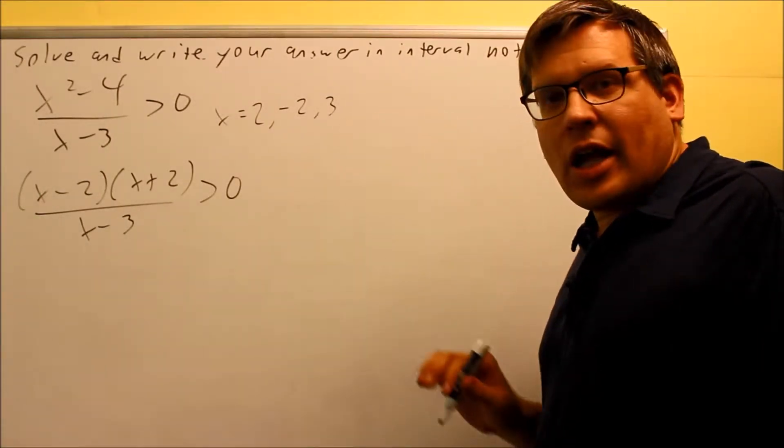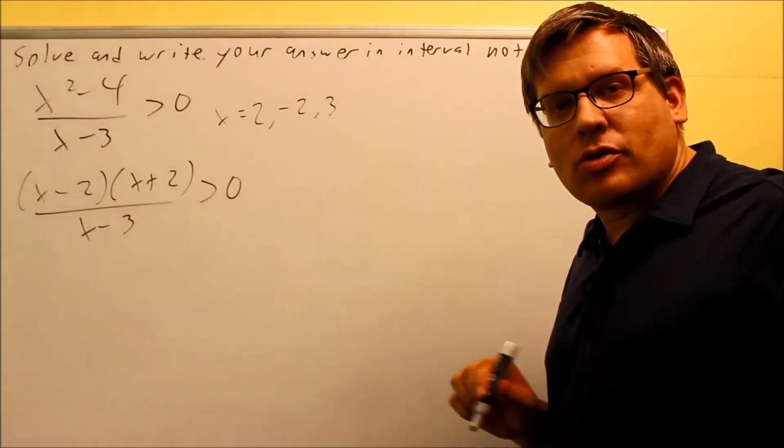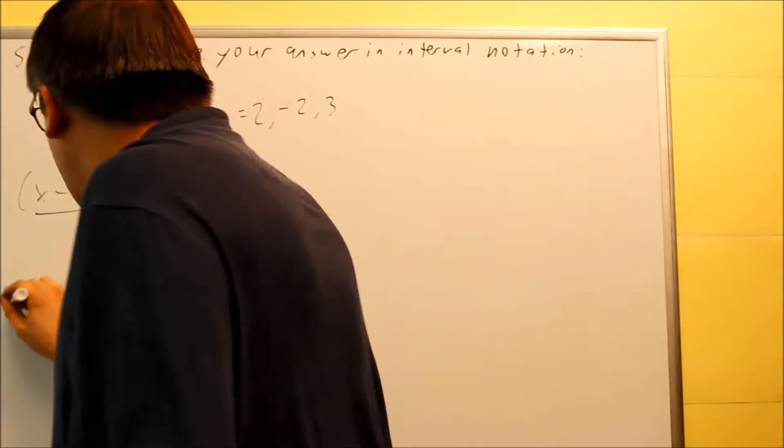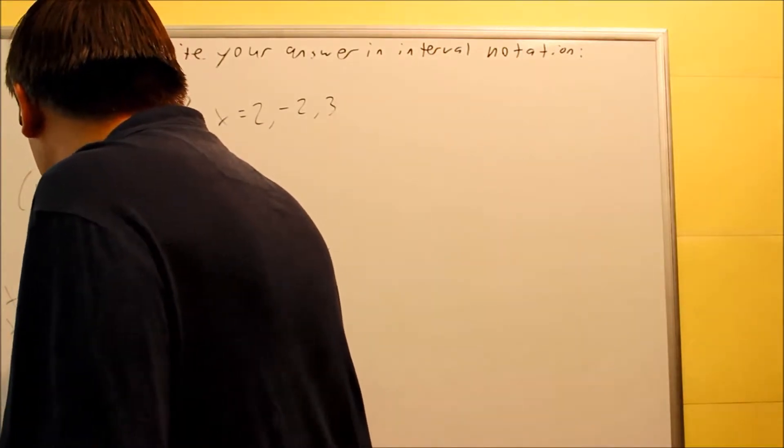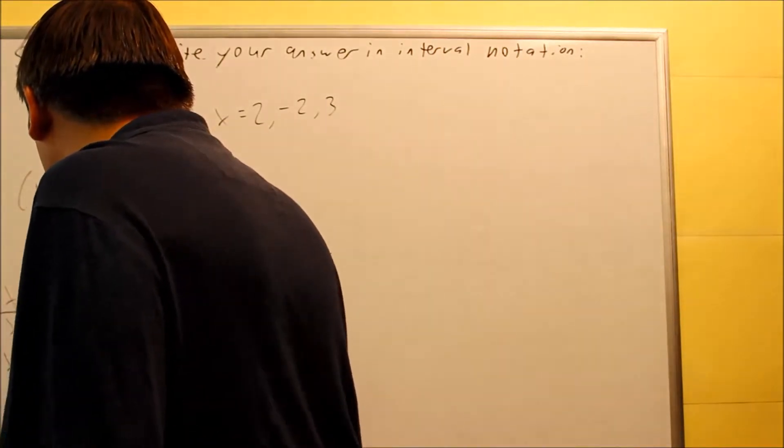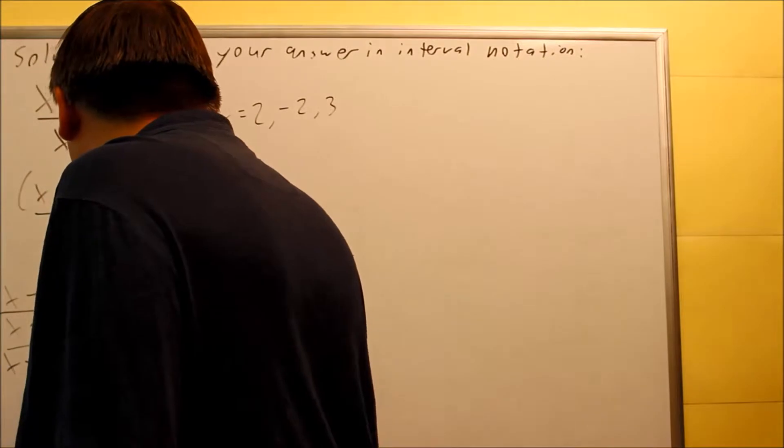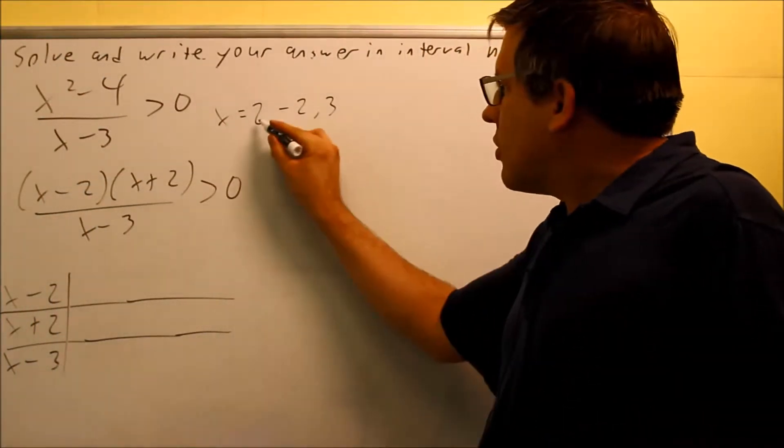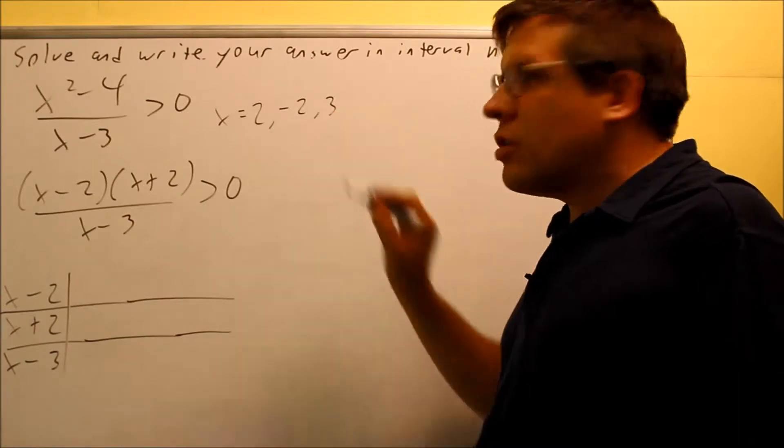So now that I have those, I'm ready now to create my table. So when I create the table, I'm going to put all these in this column: minus 2, plus 2, minus 3. I'm putting all those on that column. And then what I want to do after that is I'm going to draw a line that represents each of these numbers here.